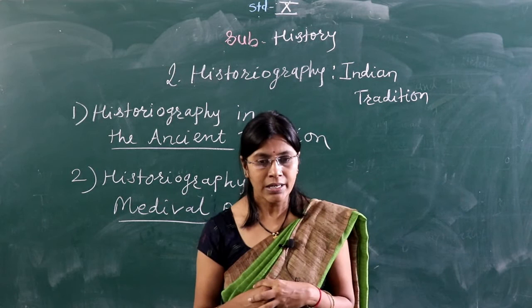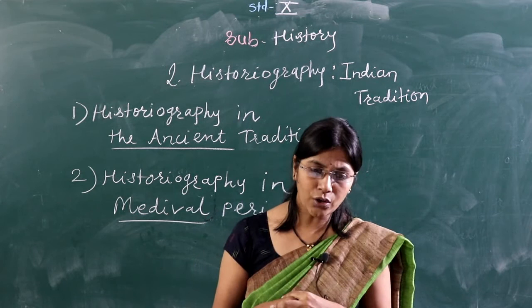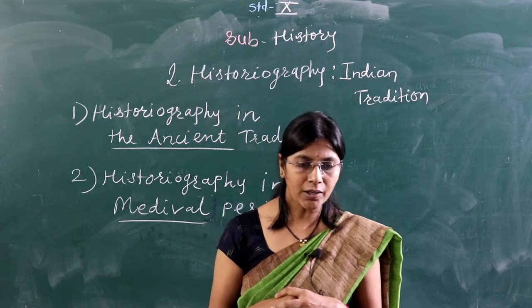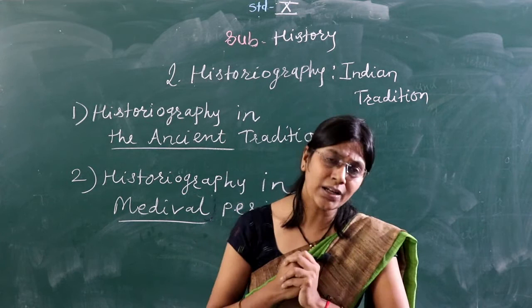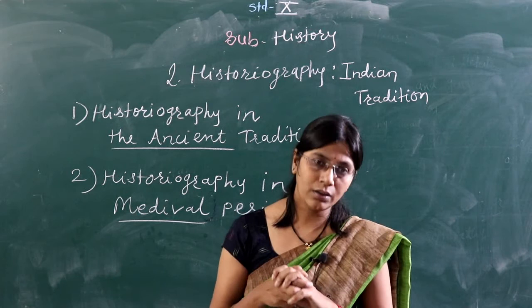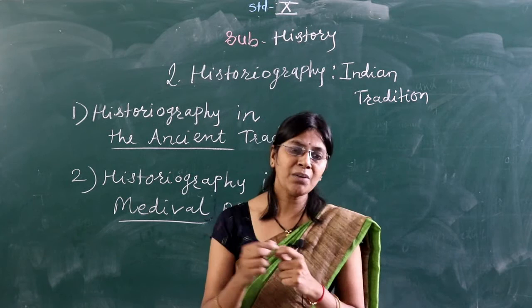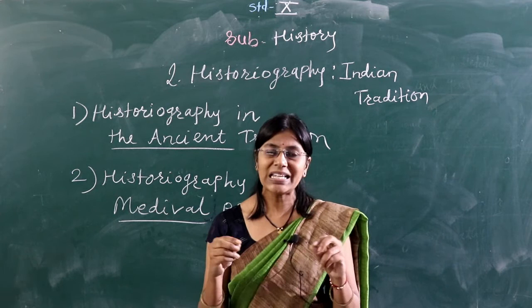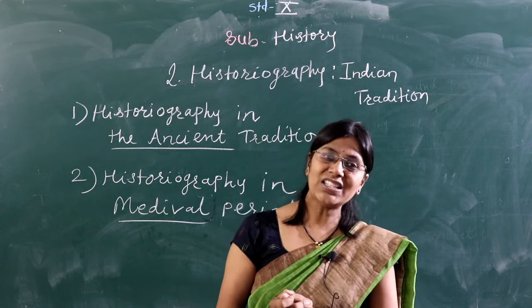The Tarikh-i-Firuz Shahi, a book written by Ziauddin Barani, states the purpose of historiography. According to Ziauddin Barani, a historian must not only record a ruler's valor and policies of welfare, but also write about the ruler's failings and incorrect policies. Whenever a historian writes about history, both good points and bad points about the kingdom and the king must be mentioned. Each and everything — good things and bad things — must be mentioned by every historian.